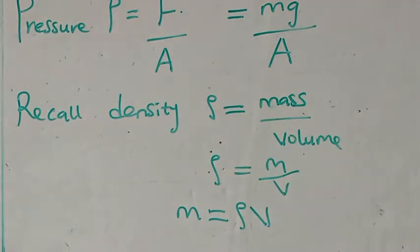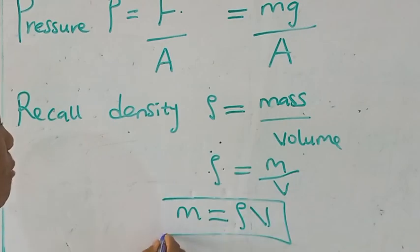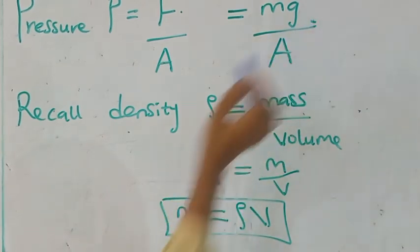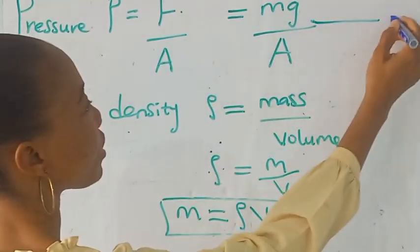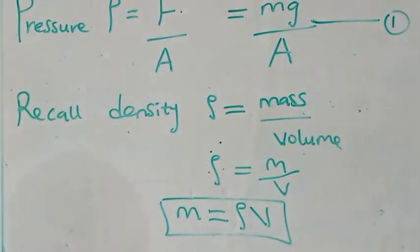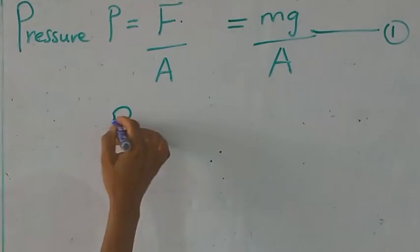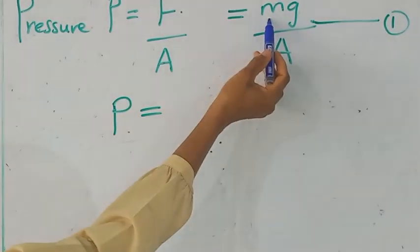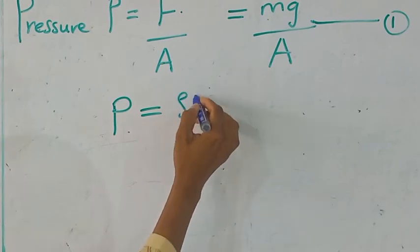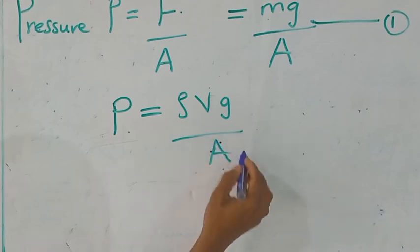So we are going to bring mass is equal to rho v into this, our formula for pressure. And that will make it that pressure is equal to, remember mass is rho v, rho vg over A.